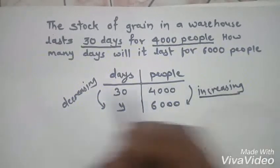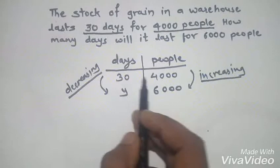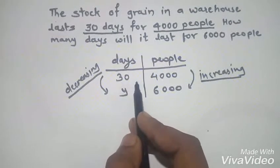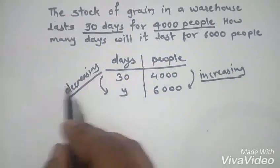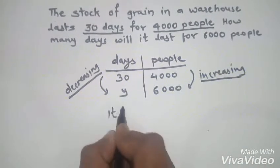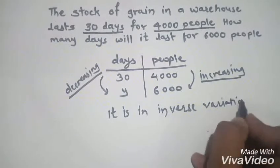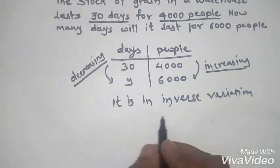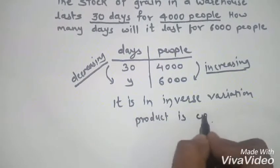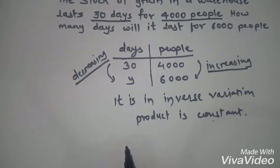If the number of people is increasing, the same stock will not last the same number of days — it will decrease. It may last 26 days or 20 days, but not 30 days. The changes seen in the two quantities are opposite in nature, so it is inverse variation. Whenever two quantities are in inverse variation, the product of those quantities is constant.